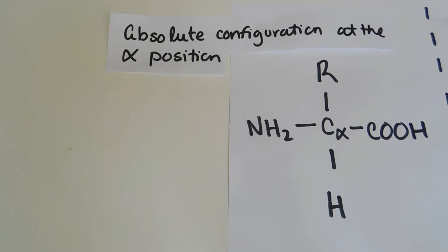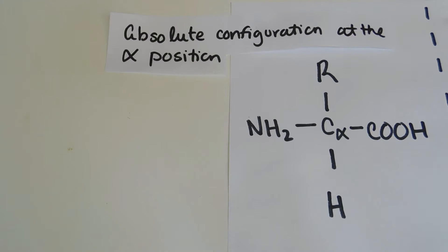Hello and welcome to MCAT Chat. Today we are going to be chatting about amino acids. There are about 20 of them and they are monomers — the building blocks of proteins. As one of my first year bio profs said, human beings are basically just bags of water and proteins. So we're going to be learning about those building blocks.